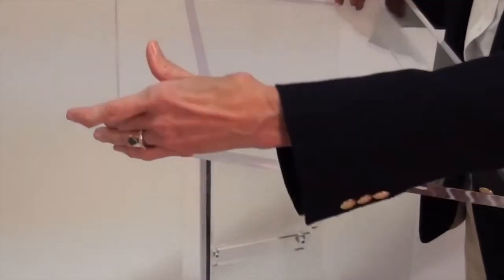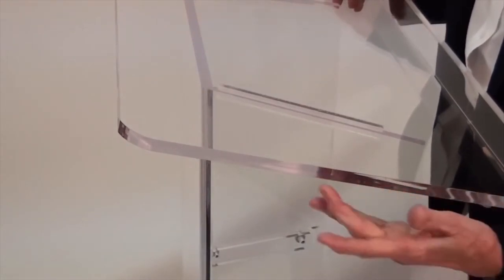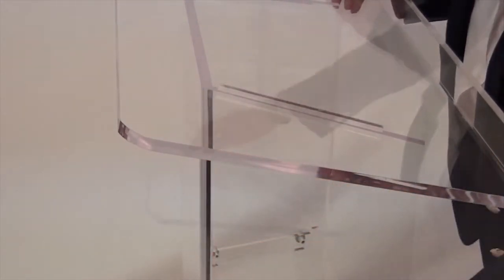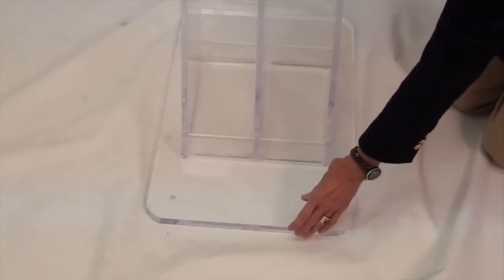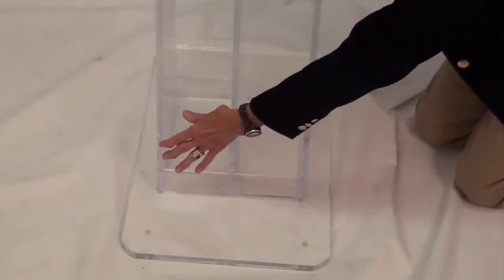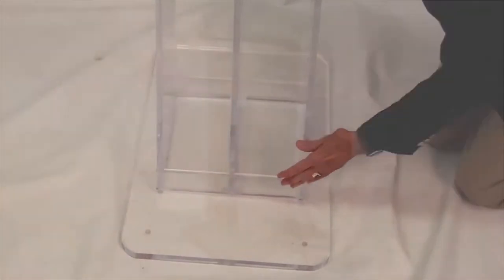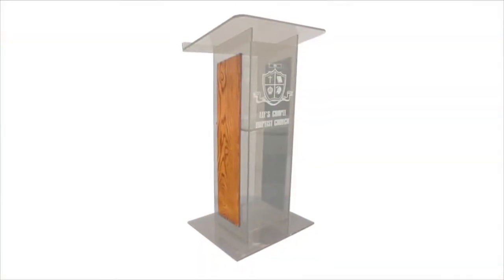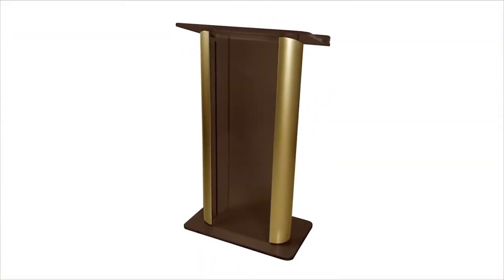Our acrylic lecterns offer contemporary elegance combined with dependable durability. They feature a sturdy base made of tough three-quarter inch acrylic material and column and reading surface made of one-half inch acrylic. Some models also include components made of wood or anodized aluminum.